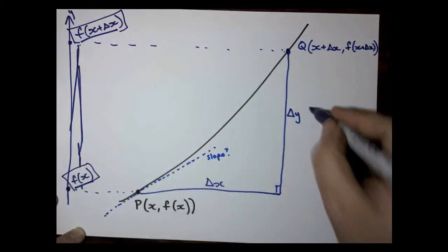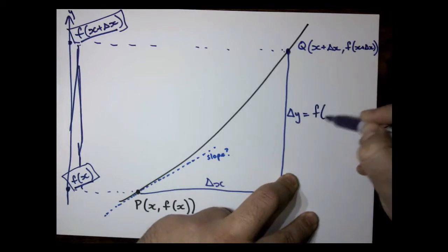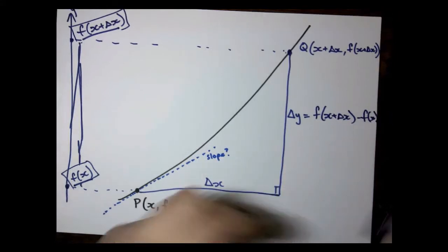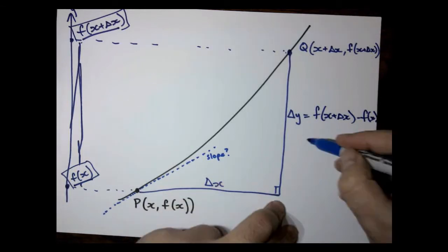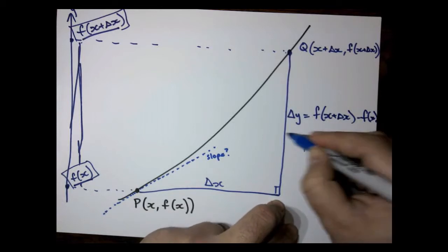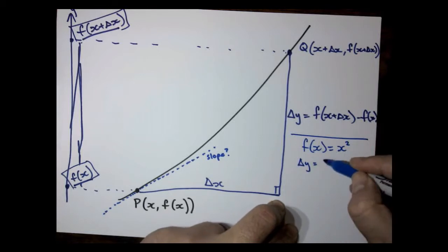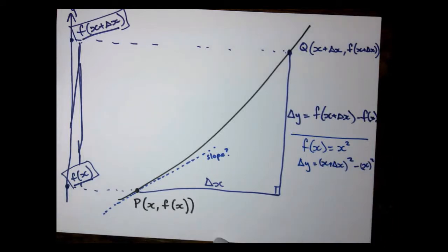That's just going to be that number take away this number. So our change in y is f of x plus delta x minus f of x. So in this particular case, because our function is f(x) = x squared, our change in y is going to be (x plus delta x) squared minus x squared.